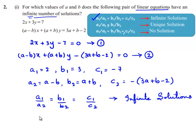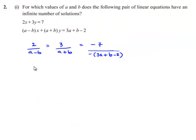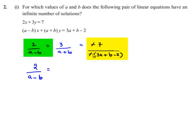Here a1 is 2 and a2 is a minus b, b1 is 3 and b2 is a plus b, c1 is minus 7 and c2 is minus of (3a plus b minus 2). Now we can write 2 by (a minus b) equals 3 by (a plus b), and since minus and minus cancel, also equals 7 by (3a plus b minus 2).